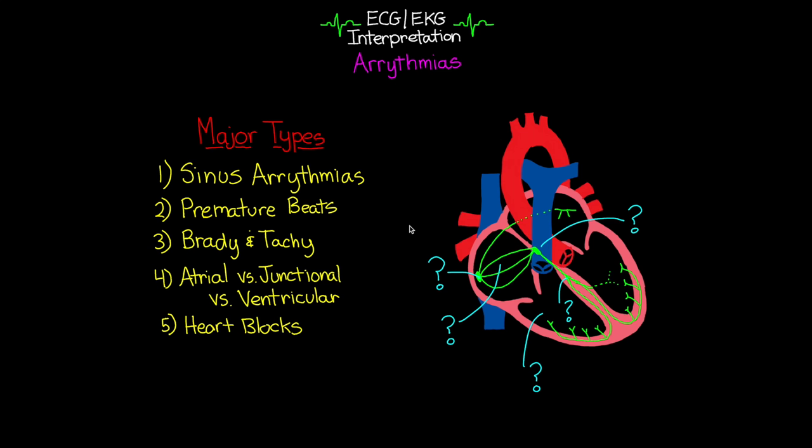Alright everybody, welcome back to another video lesson from ICU Advantage. In the fourth lesson in this series, we're going to continue our dive taking a look at arrhythmias, and in this lesson we're going to talk about atrial and junctional arrhythmias.